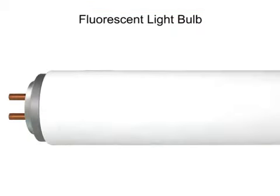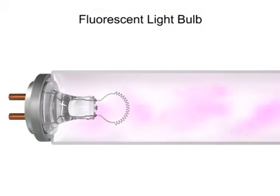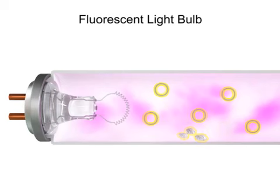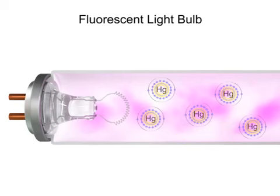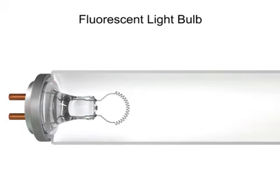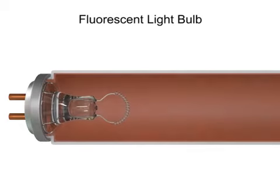A typical fluorescent bulb is filled with argon gas and a minuscule amount of vaporized mercury. The inner surface of the tube is coated with the powdery phosphor substance. At each end of the tube is an electrode with filaments.